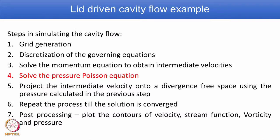In this module, we are going to talk particularly about the pressure or the projection method — how to solve the pressure Poisson equation, enforcing boundary conditions for the pressure Poisson equation, and the corresponding code with explanation. For the sake of continuity, I am listing here all the steps to solve this particular problem: grid generation, discretization of the governing equation with separate convection and diffusion terms, solving the momentum equation to obtain intermediate velocities u-star and v-star, and now solving the pressure Poisson equation. Then we project the intermediate velocity onto the divergence-free space using the pressure calculated in the previous step.